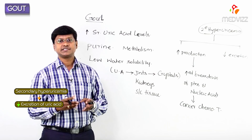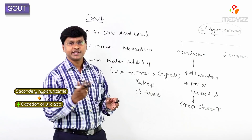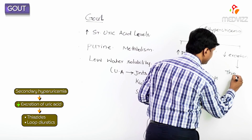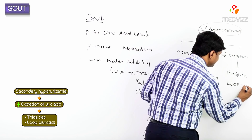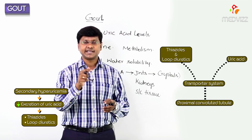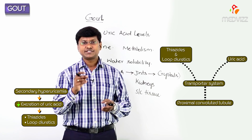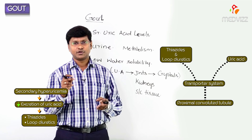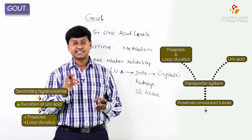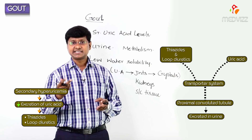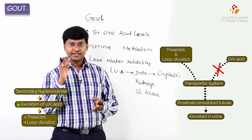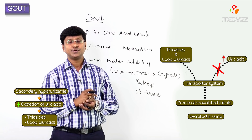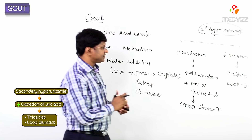In certain clinical conditions there is decreased excretion of uric acid. This occurs due to the usage of certain diuretics — for example, thiazide diuretics and loop diuretics. These diuretics are secreted into the proximal convoluted tubule of the nephron at the same transporter site where uric acid is normally secreted and excreted. Whenever we give thiazides and loop diuretics, they get secreted instead of uric acid at the proximal convoluted tubule, and thereby uric acid levels increase due to decreased excretion.